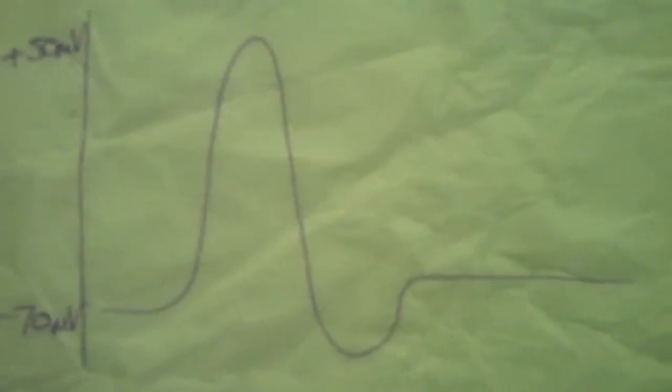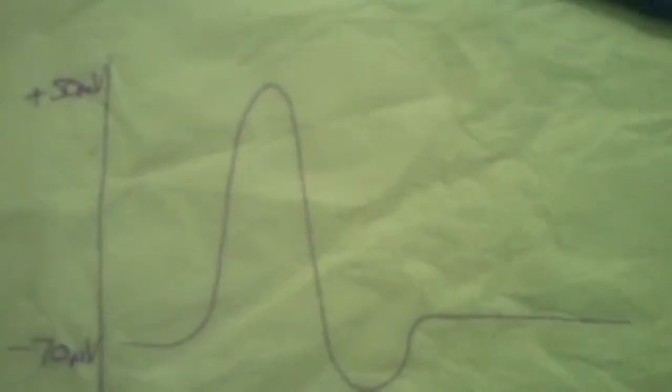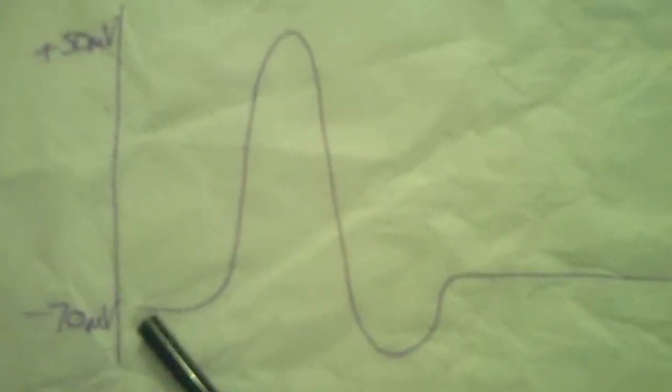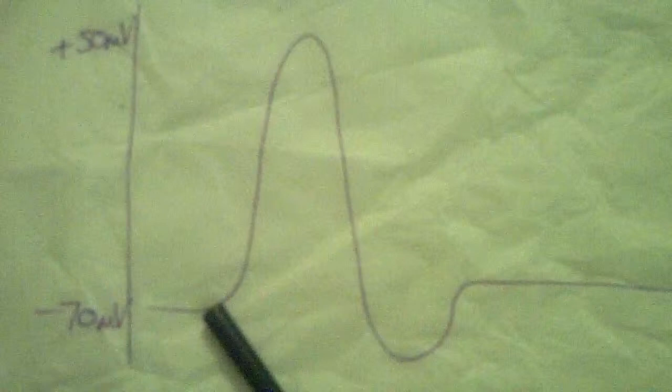Hello and we're back again with action potentials on biology basics. So here is the graph to show an action potential. You can see on this action potential we have a resting membrane potential of minus 70 millivolts.